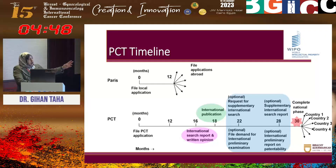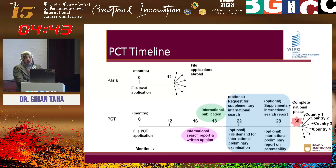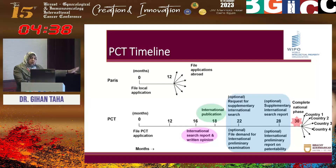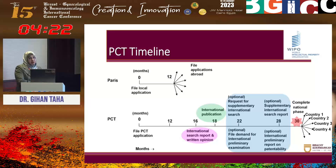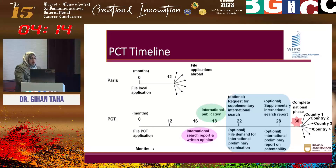If you apply locally and later think you want to have a PCT, within 12 months you can transform your local application to a PCT application. You will get the priority date — day zero — that you applied to the Egyptian patent office. So maybe after applying in a normal way, if you think you might have advantage in applying to other countries, within the first 12 months you can still transform your patent application to a PCT application.